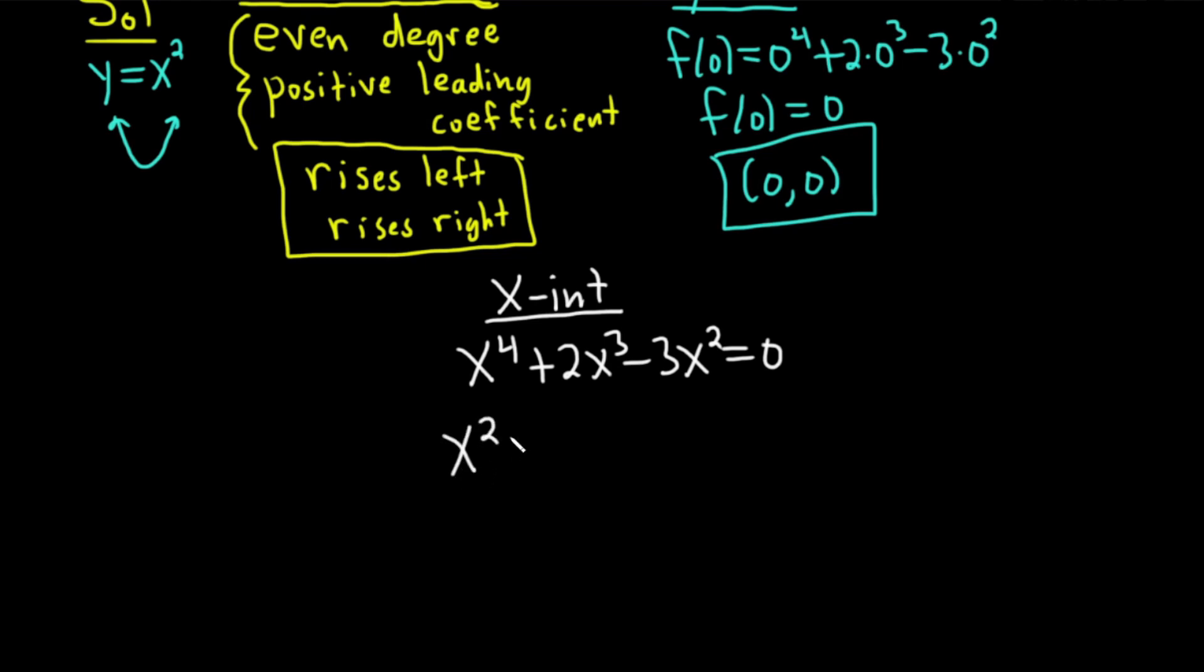Looks like we can factor out an x-squared. And we have to think, what do we multiply by x-squared in order to get x to the fourth? Well, x-squared. And what do we multiply by x-squared in order to get 2x-cubed? Well, plus 2x. The last one's easy. We just need a minus 3, right? Because x-squared times minus 3 is minus 3x-squared. And this is equal to 0. This should factor further. We have x-squared. And then here we can also factor this quadratic. So let's see. We need two numbers that multiply to negative 3 but add to 2. So plus 3 and minus 1. Yeah, 3 times negative 1 is negative 3, and then 3 plus negative 1 is positive 2.